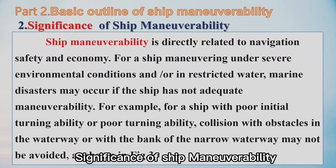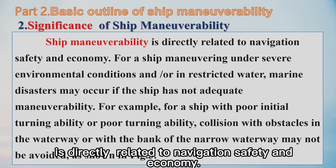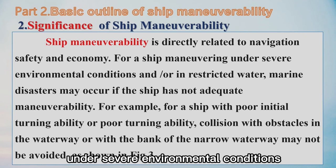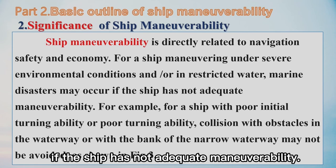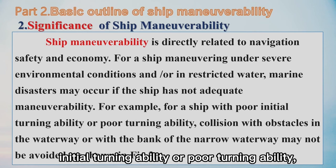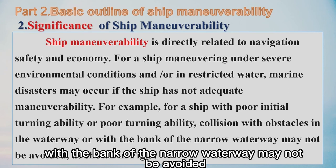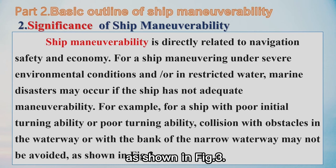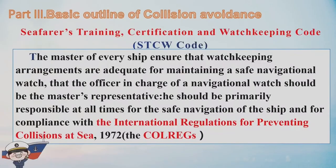Number two: significance of ship maneuverability. Ship maneuverability is directly related to navigational safety and economy. For a ship maneuvering under severe environmental conditions and in restricted water, marine disasters may occur if the ship does not have adequate maneuverability. For example, for a ship with poor initial turning ability or poor turning ability, collision or grounding in a waterway or at the bend of a narrow waterway may not be avoided.